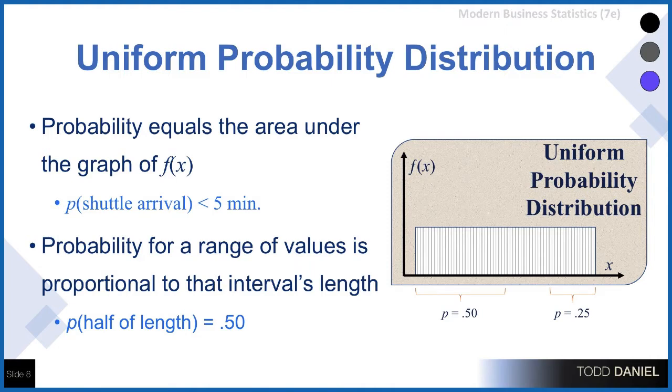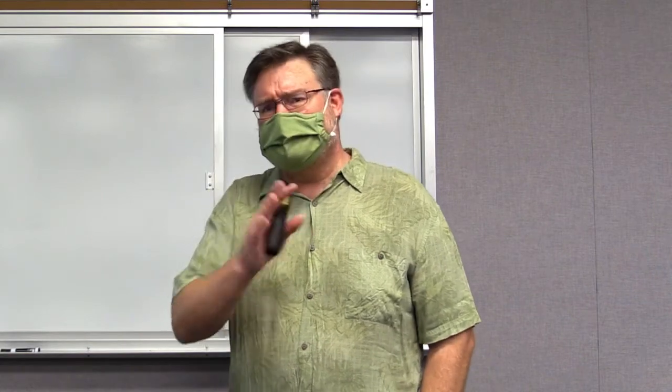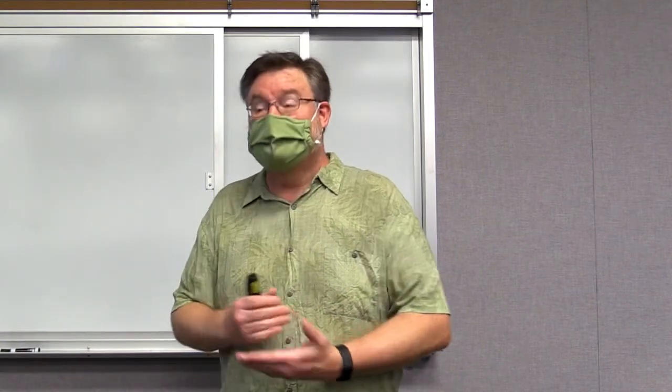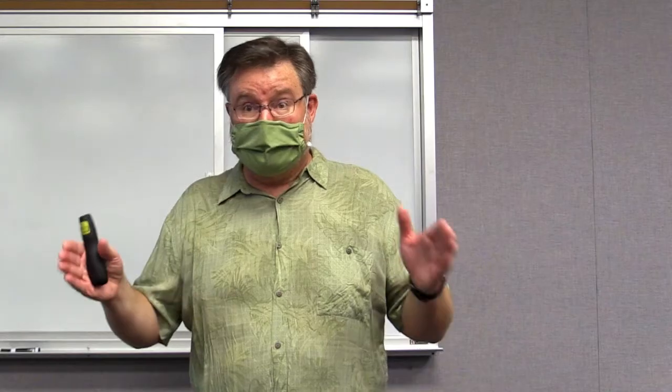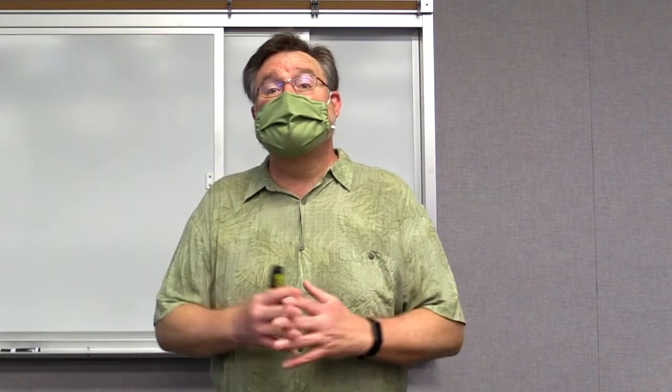The probability equals the area under the graph. So the probability of the shuttle arriving within five minutes is the same as it would be for the shuttle arriving within eight minutes. And let me clarify that because it's important whether we say the shuttle arriving at minute five or at minute eight versus up to five minutes or up to eight minutes. Because if we're talking about a space of time from zero to five minutes, that might be a larger portion of the distribution. And in that case, the range of values for the probability is proportional to that interval's length. If the shuttle runs on an eight-minute timeframe, every eight minutes a shuttle will arrive, then the probability of it showing up between minutes zero and four will be 50%, or 0.50.